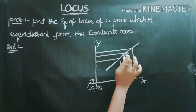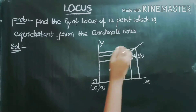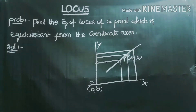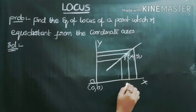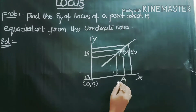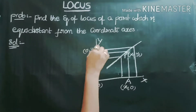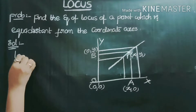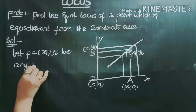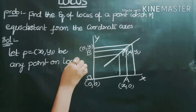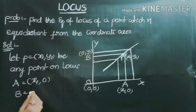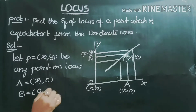Let P = (x1, y1) be any point on the locus. The given condition is that the point is equidistant from the coordinate axes. The foot of perpendicular from P to the x-axis is point A = (x1, 0), and the foot of perpendicular from P to the y-axis is point B = (0, y1).